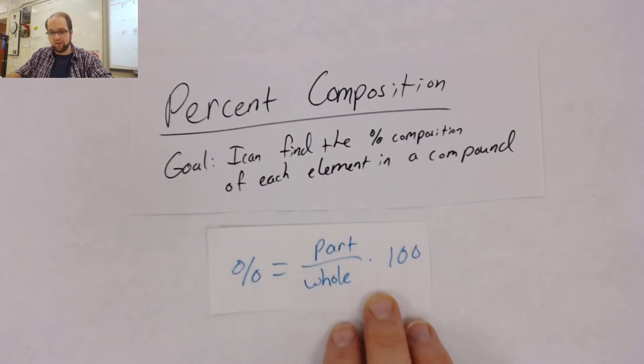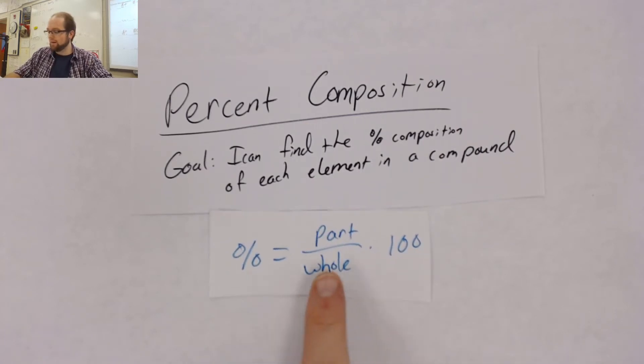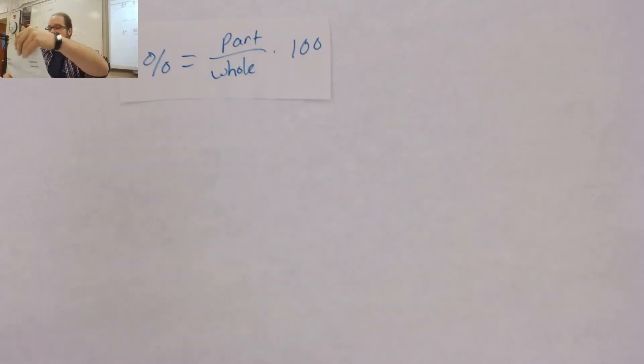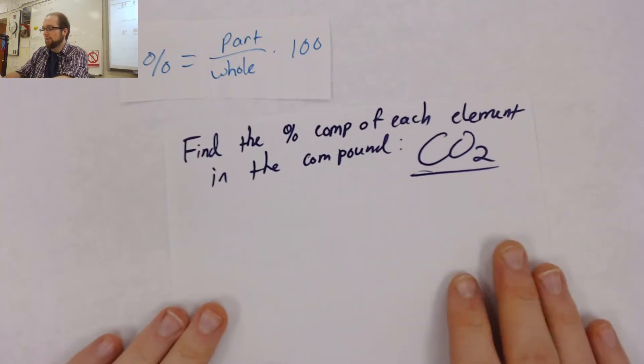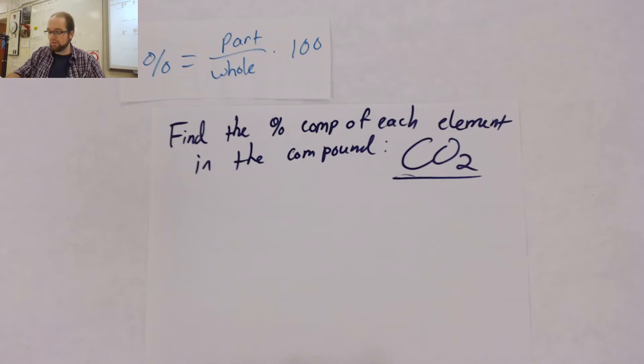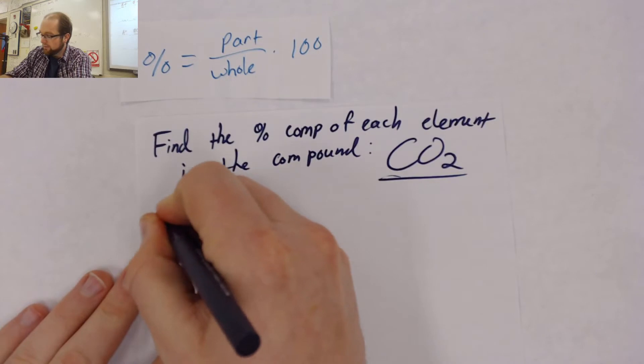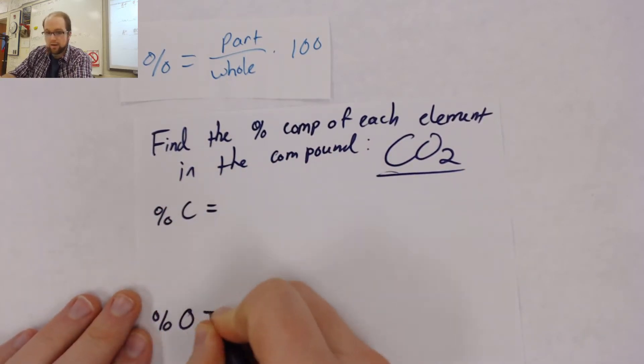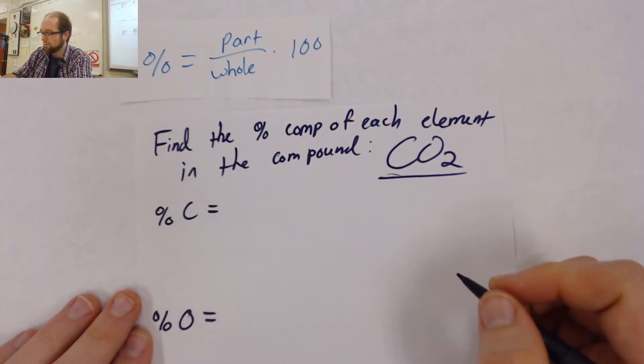Remember that when we're dealing with percents, any percent can be calculated by taking the part of something you're interested in, dividing by the whole, and simply multiplying by 100. We're going to apply this type of idea looking at a problem like this one, where I'm asked to find the percent composition of each element in the compound CO2. So all I have to do here is figure out my percent carbon and my percent oxygen that are present in my molecule.